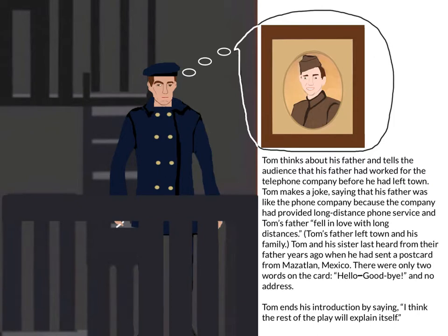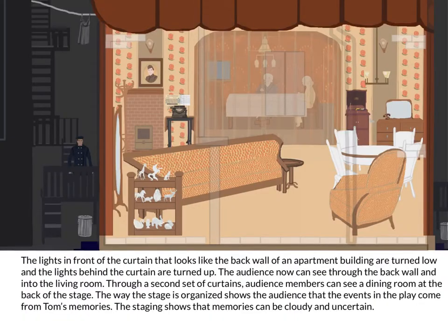Tom ends his introduction by saying, 'I think the rest of the play will explain itself.' The lights in front of the curtain are turned low, and the lights behind the curtain are turned up. The audience can now see through the back wall and into the living room, and through a second set of curtains, they can see a dining room at the back of the stage. The staging shows that memories can be cloudy and uncertain.